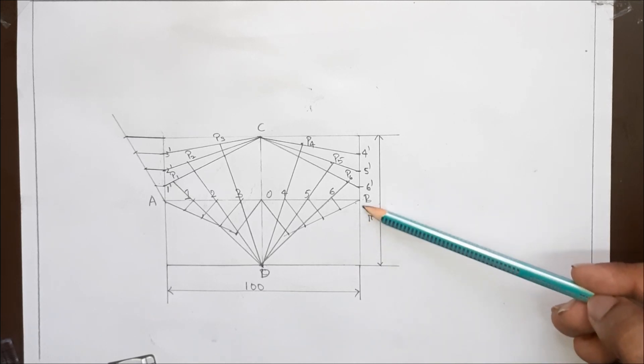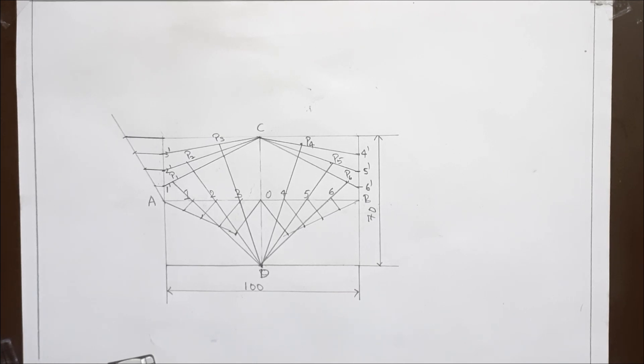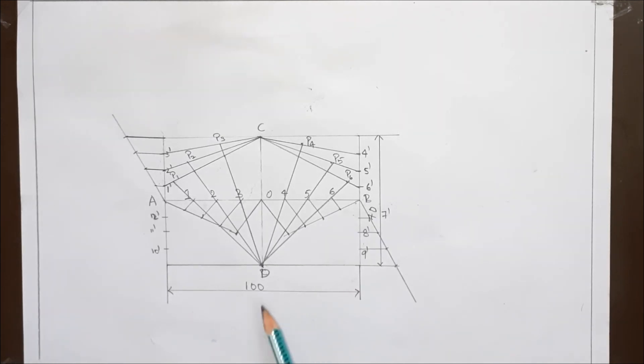Now let's divide this line into 4 equal parts, same as we have done in the last step. Now let's join D7 dash, 8 dash, 9 dash so on up to 12 dash.